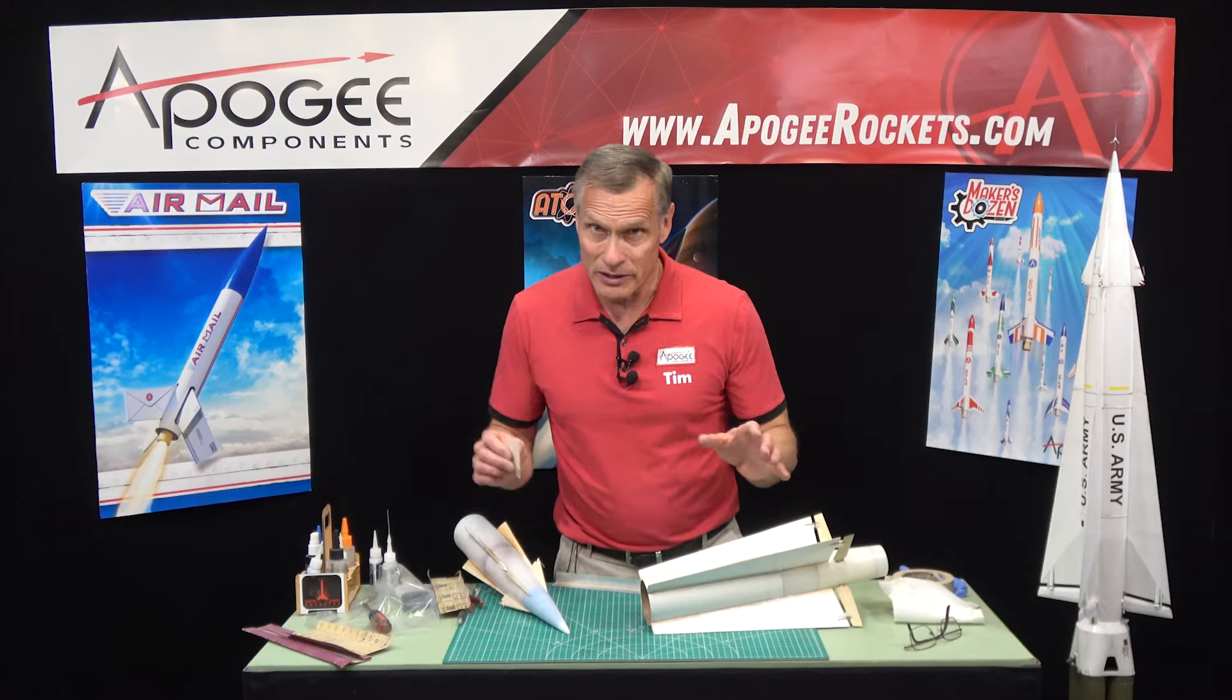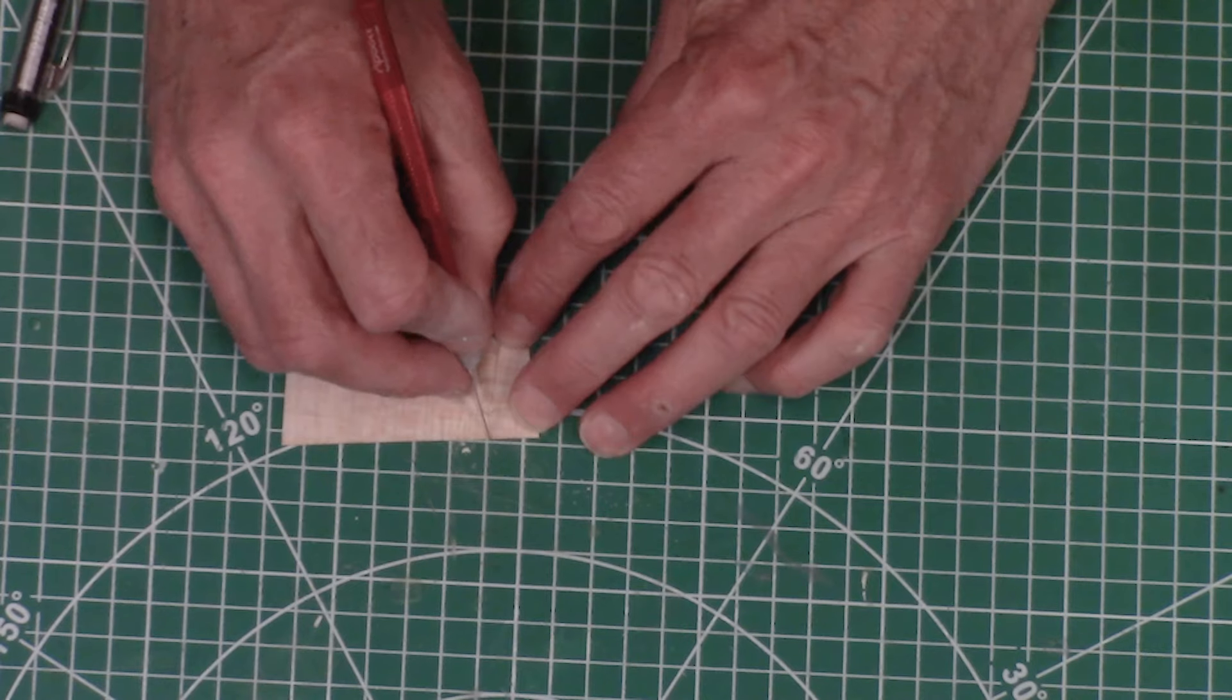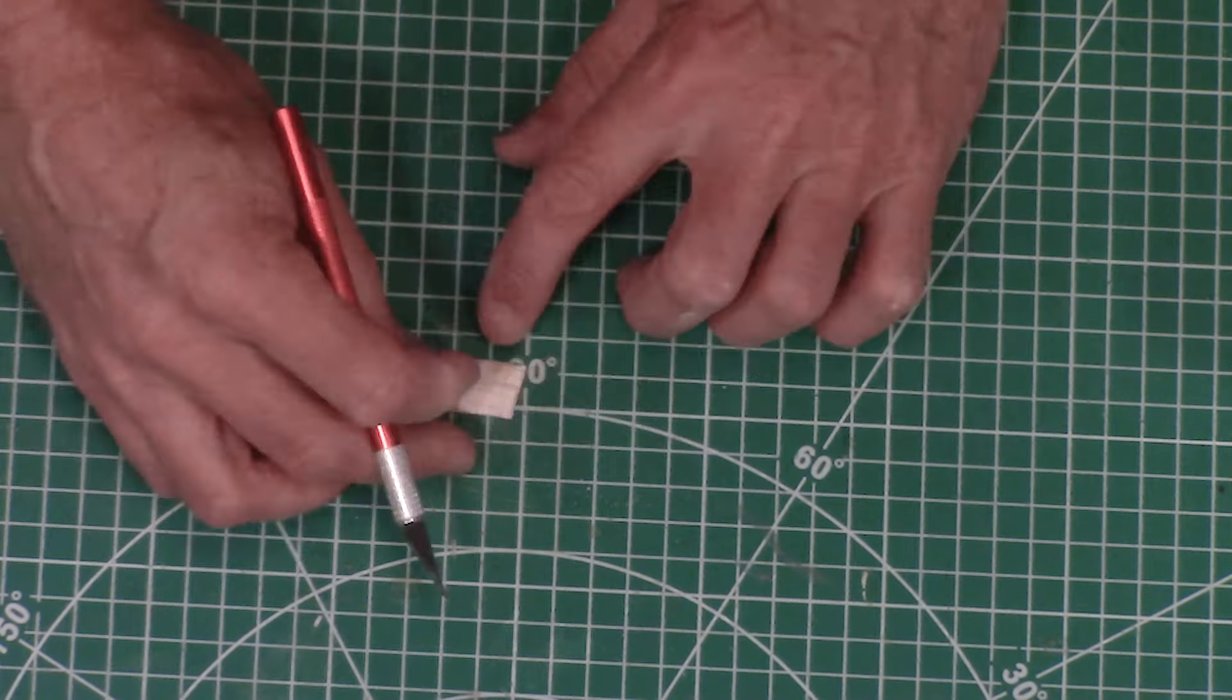So I'm going to take a sheet of balsa wood and I'm just going to put it over the edge and then take a pencil and then draw a line around it like that. And I'm going to cut this piece out and glue it here. I'm going to take some thick CA and I'm going to put that on the edge here.